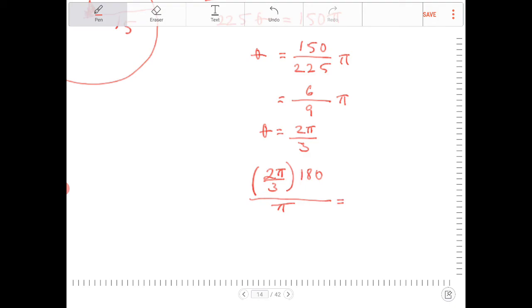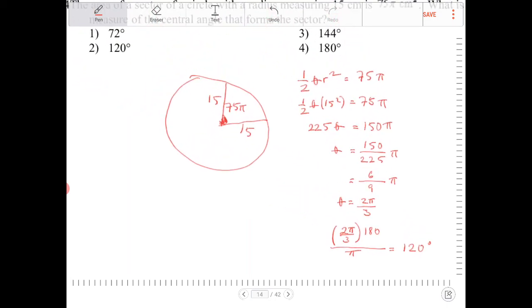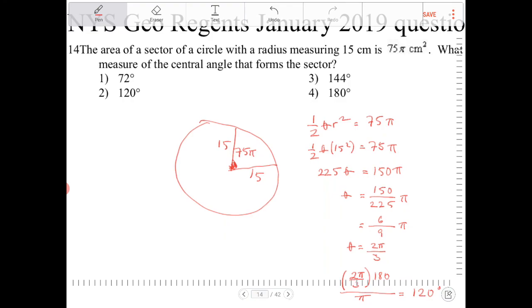So the π's cancel. I'm multiplying 2 thirds with 180 and that is 120 degrees. So that would be option 2.